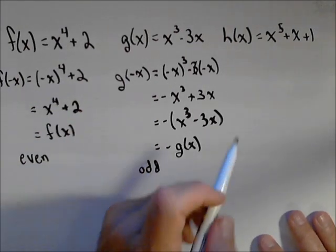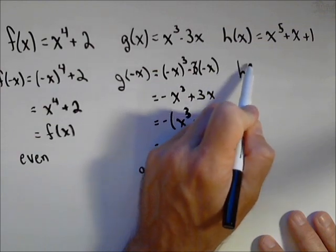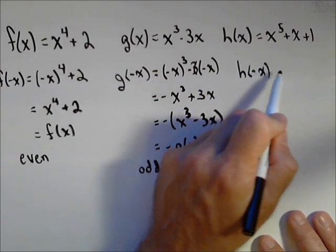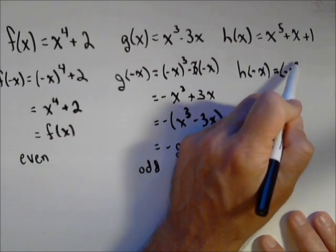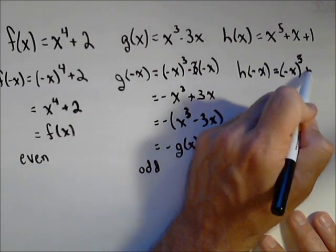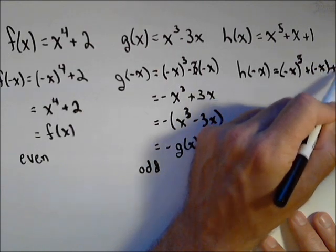Finally, last function. Again, we're going to start the same way. We're going to calculate f of negative x. You might be starting to see a relationship here. We'll talk about it at the end. Negative x to the fifth, plus a negative x, plus one.